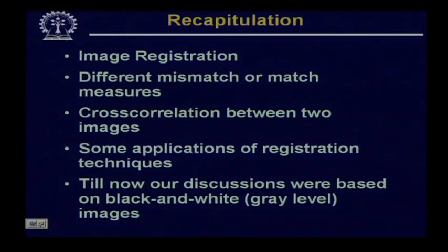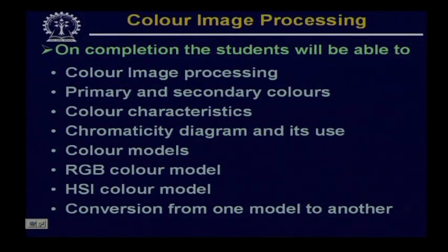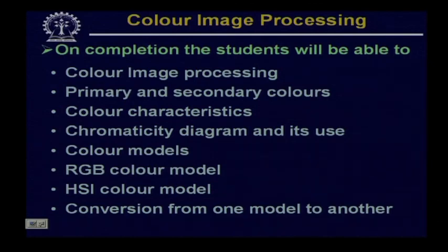Starting from today and over the coming few lectures, we will talk about colour image processing. Today we are going to introduce the concept of colour image processing. We are going to see what primary and secondary colours are, talk about colour characteristics, then see the chromaticity diagram and how it can be used to specify a colour. We will cover two colour models — the RGB colour model and the HSI colour model — and we will also see how to convert from one colour model to another.